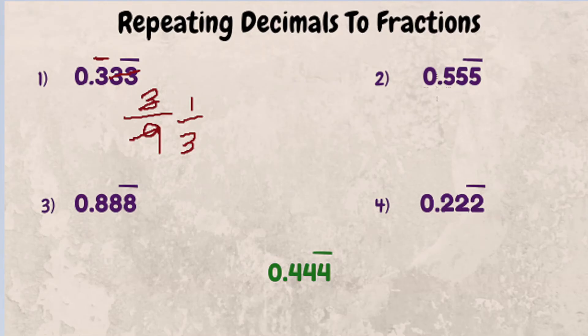Second example, 0.555, five just keeps on repeating. Put the five over nine, can't be simplified, so we're done.